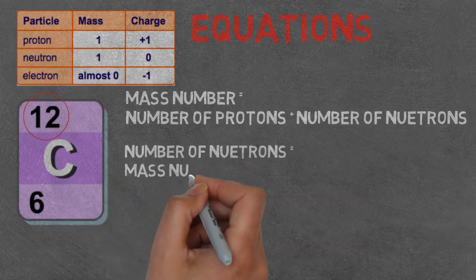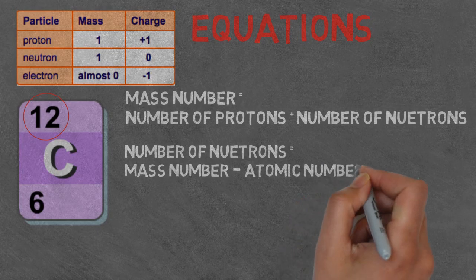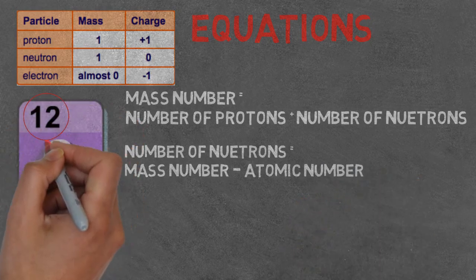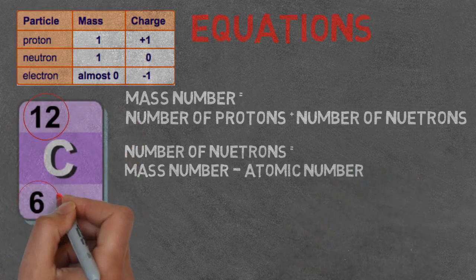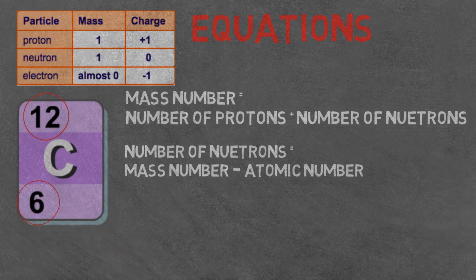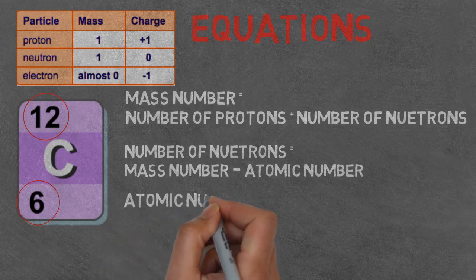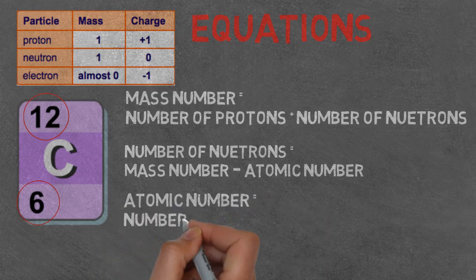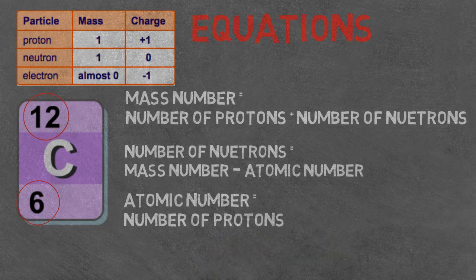But what if we didn't know the number of neutrons? Well, we can subtract the atomic number from the mass number. So carbon has a mass number of 12, we take six, and that means we get six. This means that carbon has six neutrons. And like we said before, the atomic number is the number of protons in an atom.